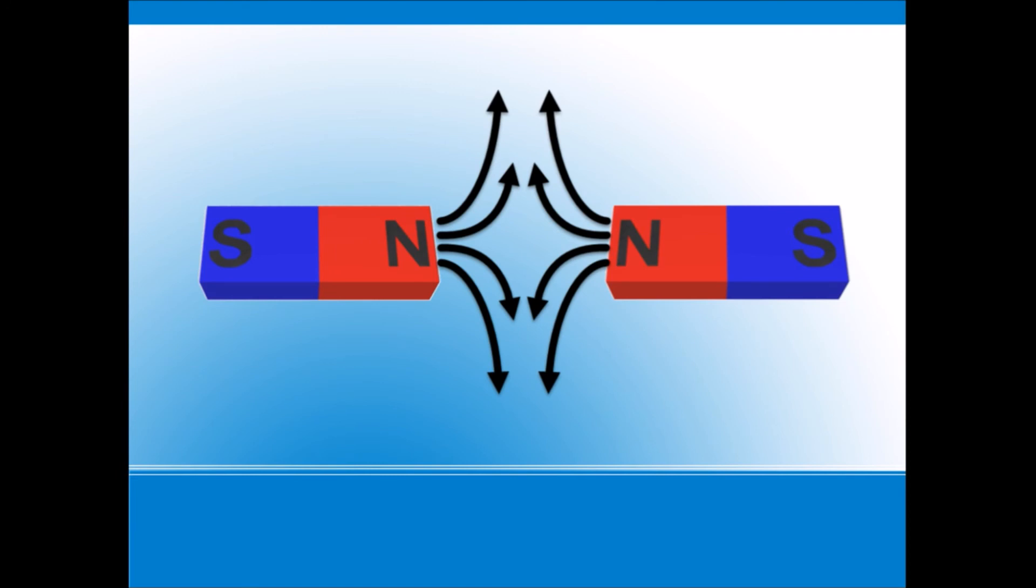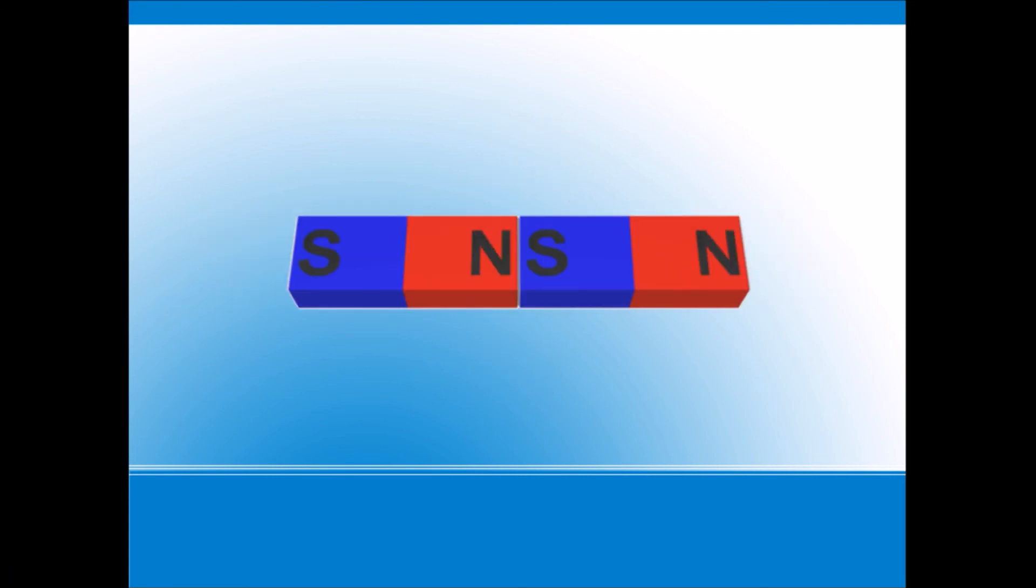When one magnet is reversed, so two like poles are facing each other, the magnetic fields point in opposite directions. This is what creates the repulsive force that pushes them apart. Usually one magnet will flip around so the opposite poles line up, then the magnets get stuck together.